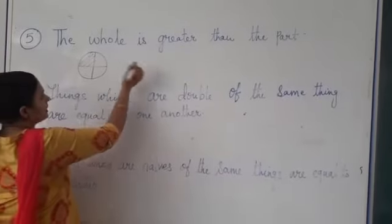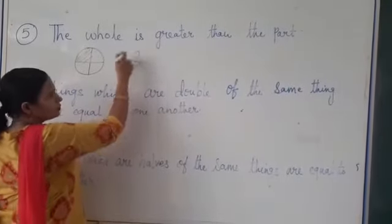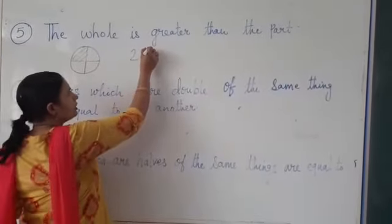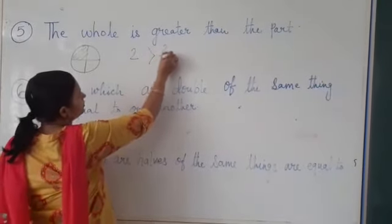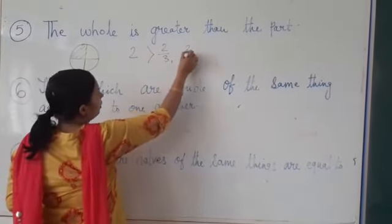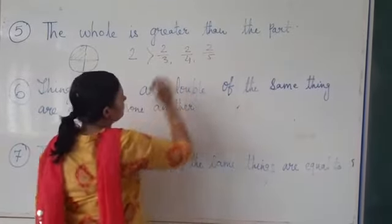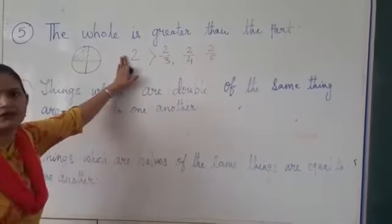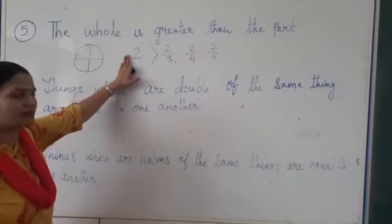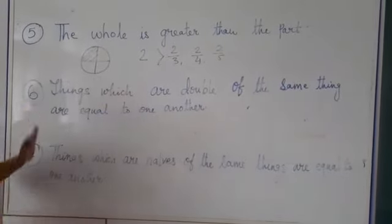Suppose, let's take another example. 2. 2 is a whole. It is always greater than 2 by 3 or let's take 2 by 4, 2 by 5. 2 is always greater than the part. This is what is being said right now.